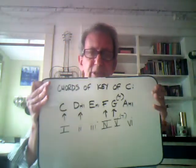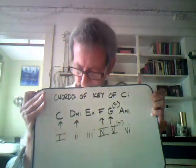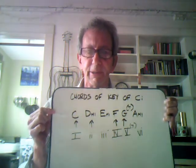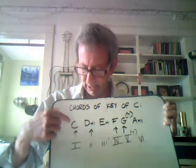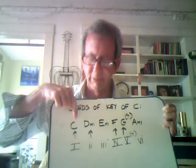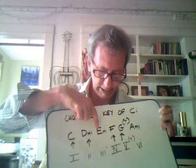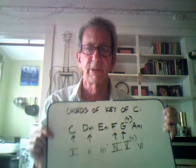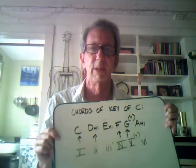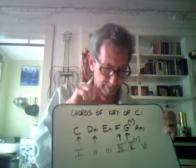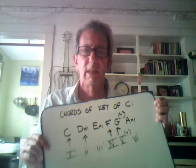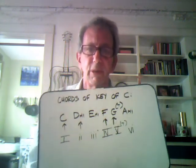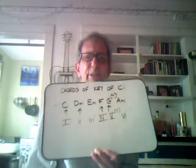First, we have the chords here of the key of C. You'll notice the Roman numerals underneath - I'll explain that in a moment. The chords of the key of C are C, D minor, E minor, F, G, and A minor. We're leaving out the seventh chord because that's actually absorbed by the five chord, G7. I'll speak of that more thoroughly in the future.